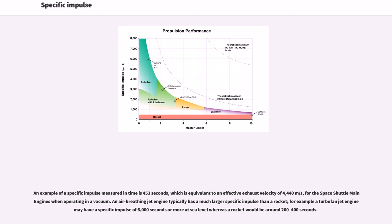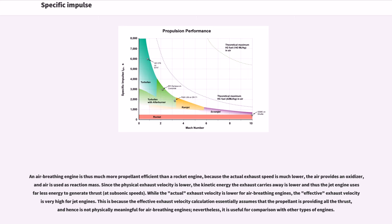An example specific impulse measured in time is 453 seconds, equivalent to an effective exhaust velocity of 4,440 meters per second, for the Space Shuttle main engines in vacuum. An air-breathing jet engine typically has a much larger specific impulse — for example, a turbofan may have a specific impulse of 6,000 seconds or more at sea level, whereas a rocket would be around 200 to 400 seconds. An air-breathing engine is more propellant efficient because the actual exhaust speed is much lower, air provides oxidizer, and air is used as reaction mass, so less kinetic energy is carried away. The effective exhaust velocity is very high for jet engines because the calculation assumes propellant provides all the thrust, which is not physically meaningful but is useful for comparison.